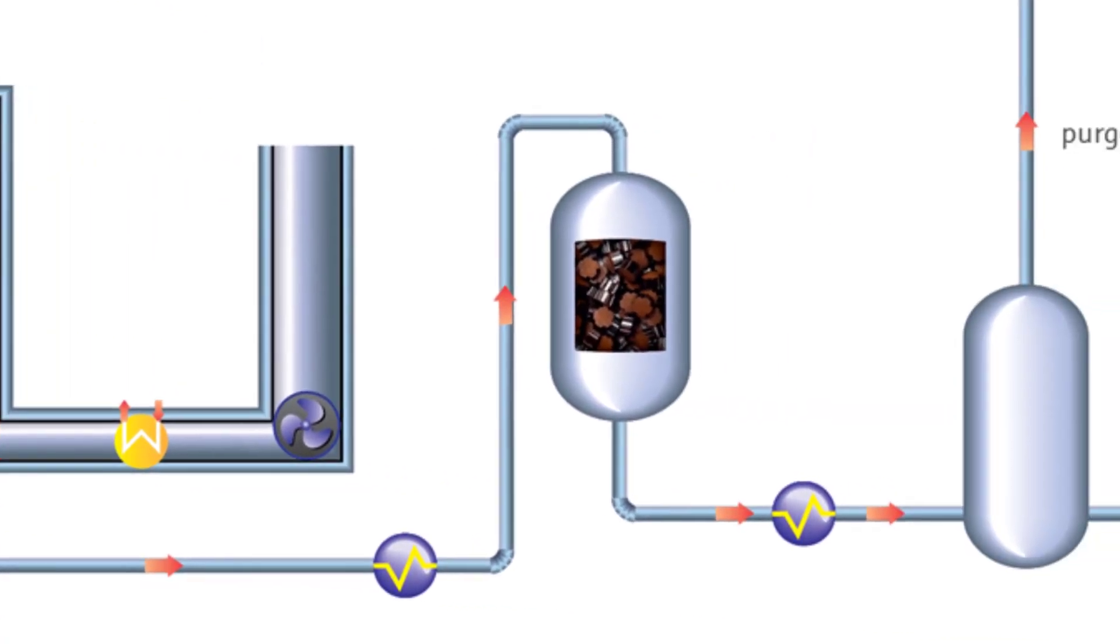From here, the flow moves to the shift converter. Here, more hydrogen is produced by using catalysts to drive the water gas shift reaction towards the product. This converts the carbon monoxide that was created in the steam reformer and the leftover steam into hydrogen.